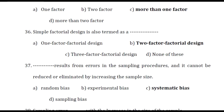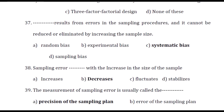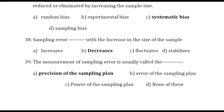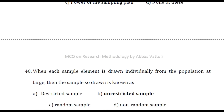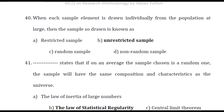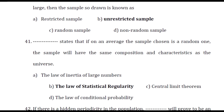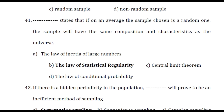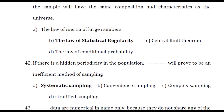Systematic bias results from errors in the sampling procedures and cannot be reduced or eliminated by increasing the size of the sample. Sampling error decreases with increase in the size of the sample. The measurement of sampling error is usually called the precision of the sampling plan. When each sample element is drawn individually from the population at large, the sample drawn is known as unrestricted sample. The law of statistical regularity states that if on average the sample chosen is a random one, the sample will have the same composition and characteristics as the universe. If there is a hidden periodicity in the population, systematic sampling will prove to be an inefficient method.